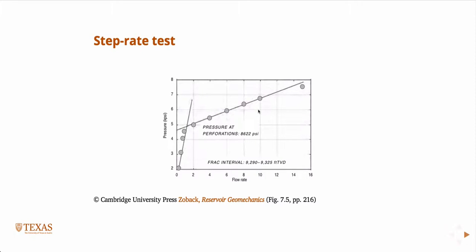Last time we were talking about the different types of tests that we do to determine the minimum principal stress, which is usually SH-min, but not always. It could possibly be the vertical stress.